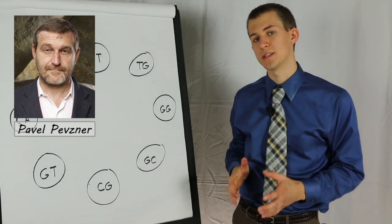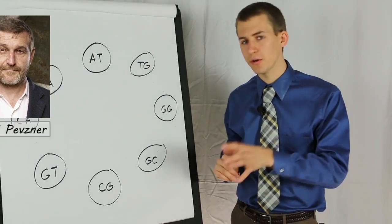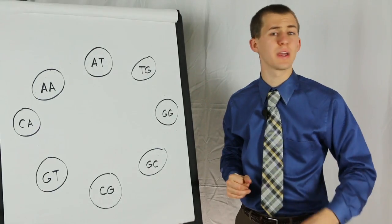Pavel Pevsner realized he could align the pieces much faster if he turns the problem into one of finding an Eulerian path.